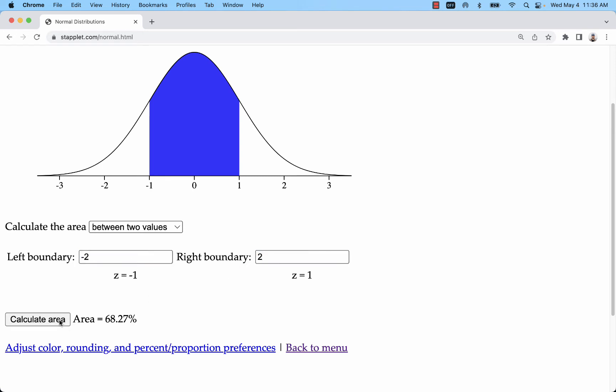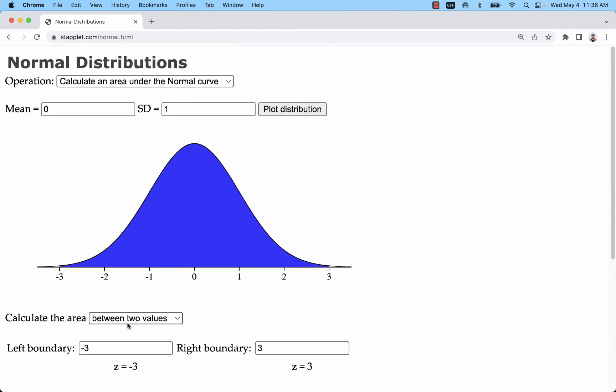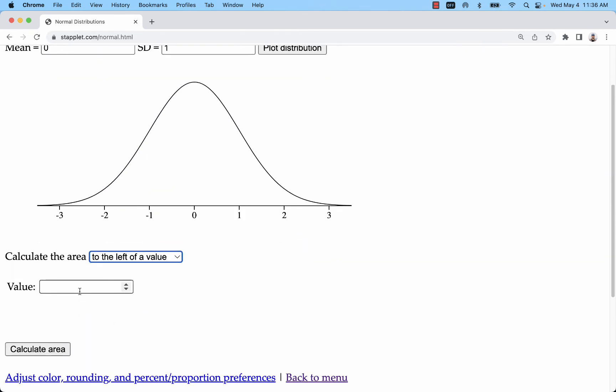And I can change these to 2, get 95%, or 3, and get 99.7%, just like the empirical rule says.